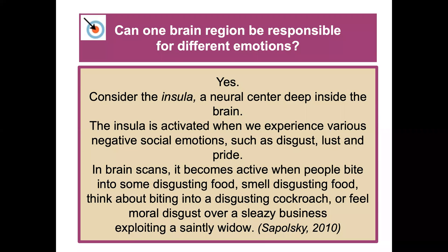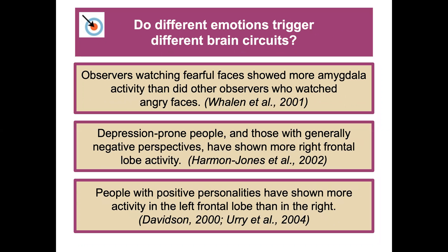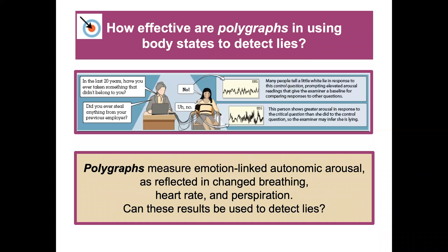Can one brain region be responsible for different emotions? Consider the insula — a neural center deep inside the brain activated by various negative social emotions such as disgust, lust, and pride. It becomes active when people bite into something disgusting, smell disgusting food, or feel moral disgust. Different emotions also trigger different brain circuits: fearful faces show more amygdala activity than angry faces; depression-prone people show more right frontal lobe activity, while positive-personality people show more left frontal lobe activity.